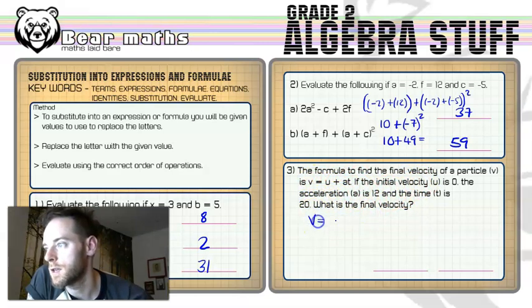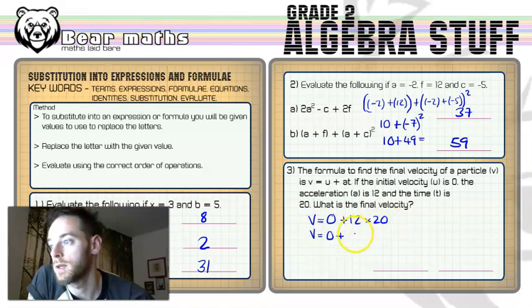So V is equal to 0, because U is 0, plus A multiplied by T. So A is 12 and T is 20, so multiply it by 20. V is equal to 0 plus 12 multiplied by 20, is 12 times 2 is 24.